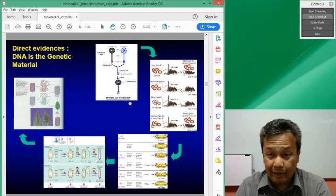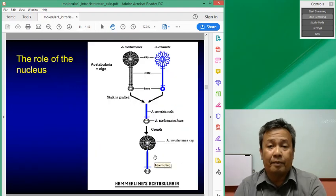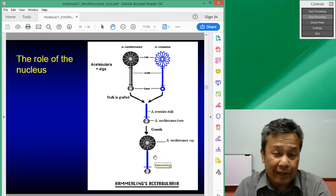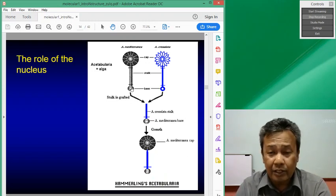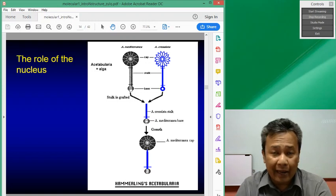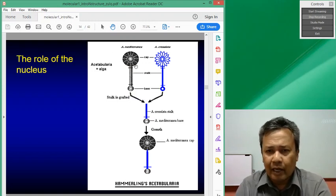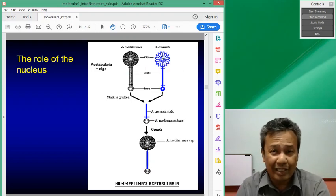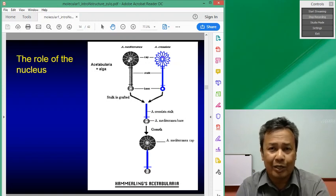One of the first ones is this experiment by Hamelin using acetabularia. Acetabularia is a species of alga and it's a single cell. It is structured such that it has a base that has the nucleus, a stalk, and the top part here we call a cap. There are two species that can be differentiated quite easily by looking at the cap.